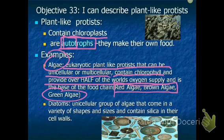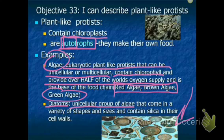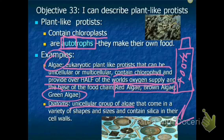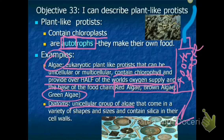Another type you probably use every day without knowing it are called diatoms — a unicellular group of algae that come in a variety of shapes, sizes, and colors. They're microscopic, being only one cell. They're special because they contain silica in their cell walls, and we actually use diatoms in our toothpaste. That's the gritty stuff that helps remove gingivitis and buildup from our teeth. Protists are all around us and used for many different things.